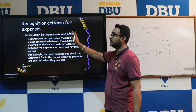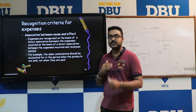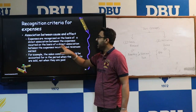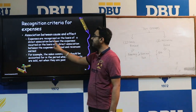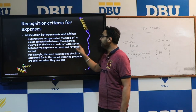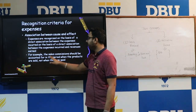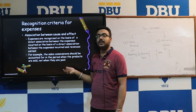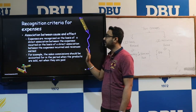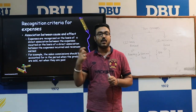The next main topic is recognition criteria for expenses. The first is association between cause and effect. There must be a direct association between the expenses incurred and the revenue earned. For example, sales commission should be accounted for in the period when the products are actually sold, not when they are paid.